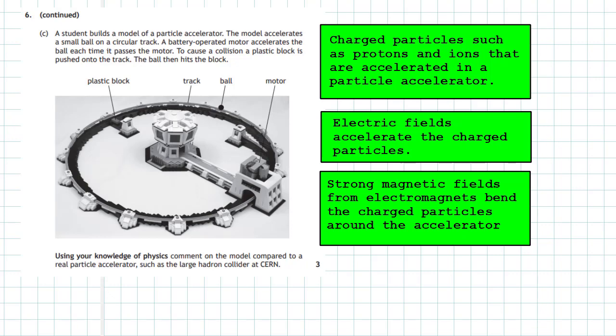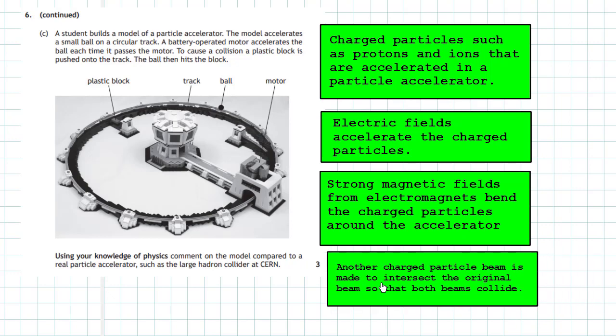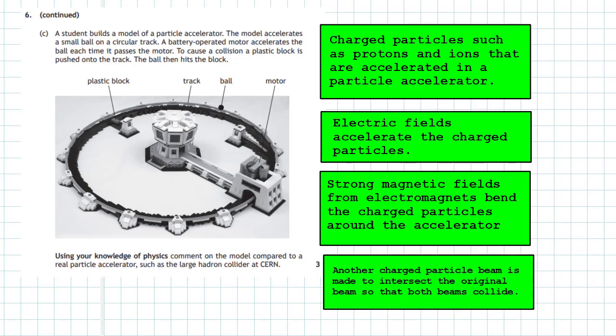And finally, the plastic block which is put there to make the ball collide with it is in reality another charged particle beam which is made to intersect the original beam so that both beams collide. And when these beams collide, the protons will smash into the protons, the ions will smash into the ions.